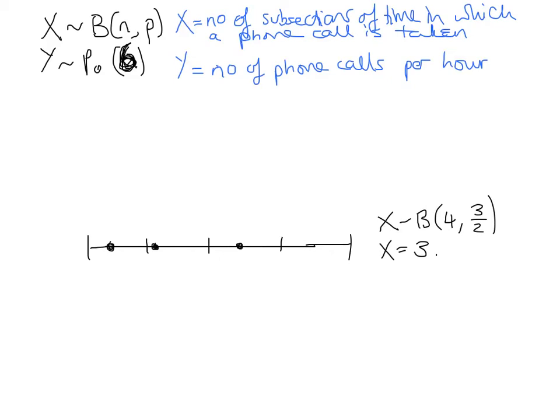What if I was thinking about this as a Poisson? If y is the number of phone calls per hour, then I'm not interested in the subdivisions — it's literally just how many phone calls did I get. So in this case y is 3. So obviously Poisson and binomial are very similar. They can be used to model the same thing just by looking at it in a slightly different way. The number of phone calls is 3, x is 3, y is 3.